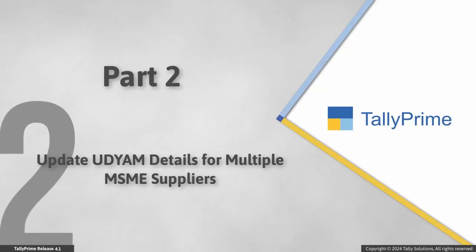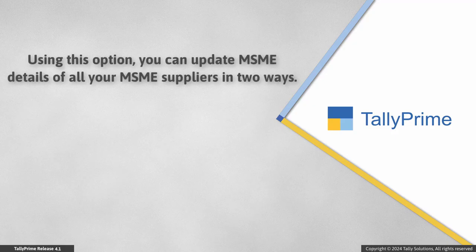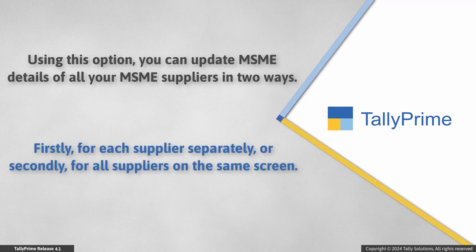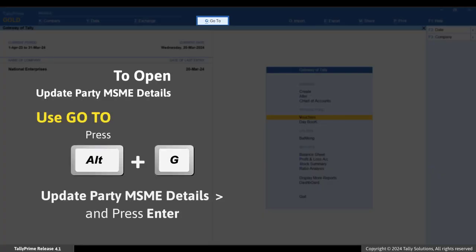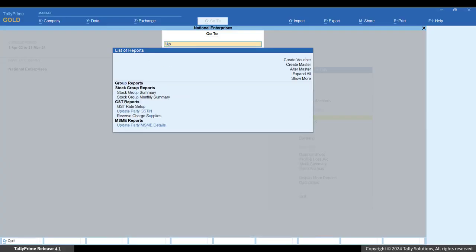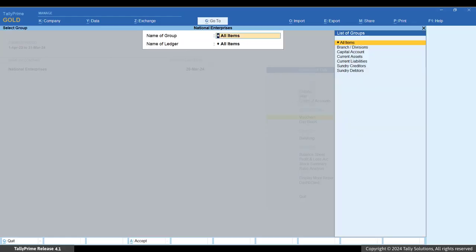Alternatively, you can use the Update Party MSME Details report to conveniently specify Udyam details of all MSME parties from a single screen. Using this option, you can update MSME details of all your MSME suppliers in two ways: for each supplier separately, or for all suppliers on the same screen. Let's look at the first option. Press Alt+G, type or select 'Update Party MSME Details', and press Enter.